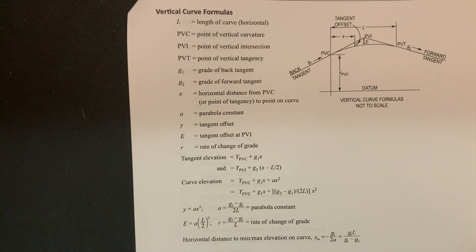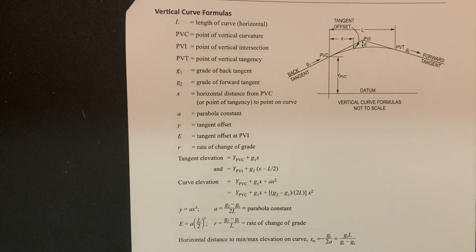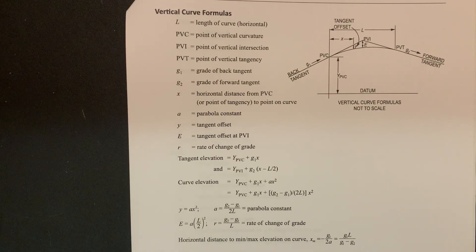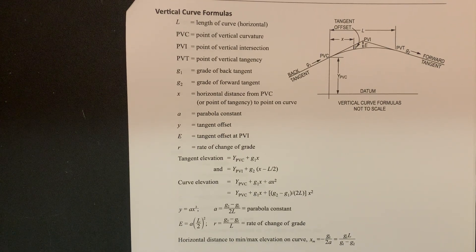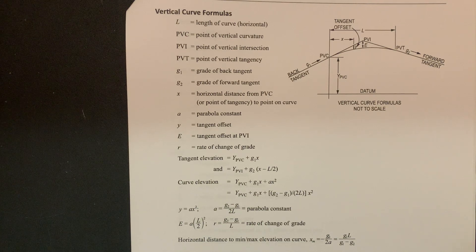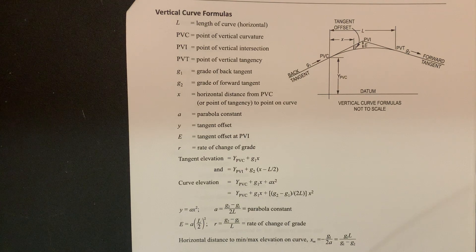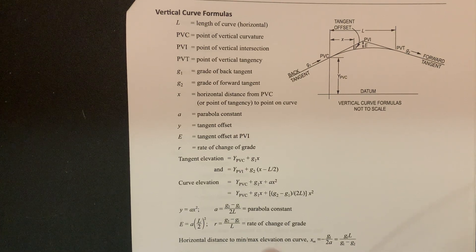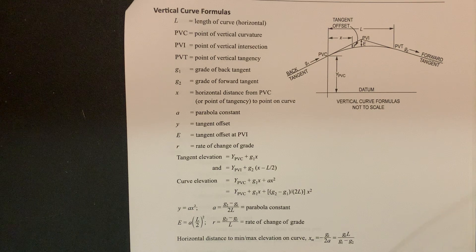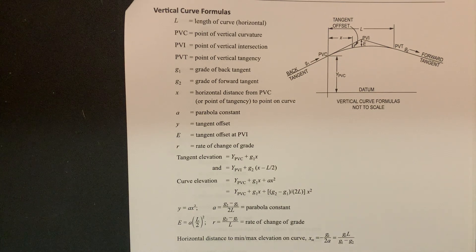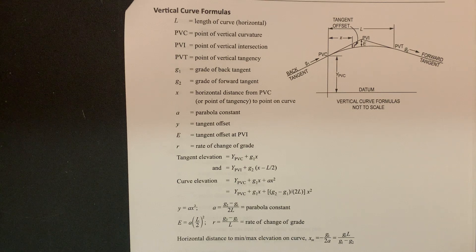So here's your formula set in your FS handbook, what they'll give you on the test. You can see you can do these by the formula set or you can use your program however you'd like to do it. So you can see they have the minimum maximum elevation on the curve. So of course your max would be for the crest and then the minimum would be the sag.